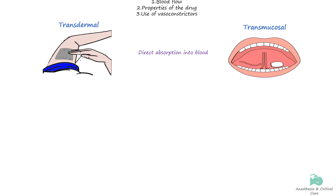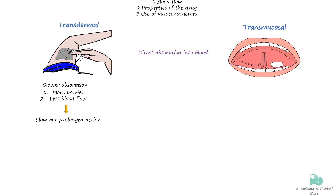Transdermal and transmucosal absorption also bypass the GI tract, allowing medication to enter the systemic circulation directly through the skin or mucous membranes. The skin, by design, presents a considerable barrier to absorption, and typically several hours are required for the clinical effect to commence following transdermal drug delivery. The drug must penetrate all layers of the skin to reach the capillaries where it is absorbed into the systemic circulation. The blood flow to skin is also less compared to muscles, resulting in prolonged absorption. Owing to its large surface area, the skin provides a depot of drugs, resulting in continuous drug delivery for a prolonged period.